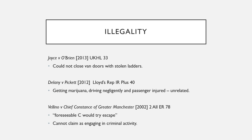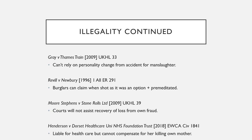In Grahame v Thames Trains, the principle is that you cannot rely on a personality change resulting from a previous accident to justify illegal actions. The claimant was in a train accident, suffered personality change as a result of PTSD and depression, then stabbed a homeless man to death and tried to claim. It did not succeed — his actions were illegal.